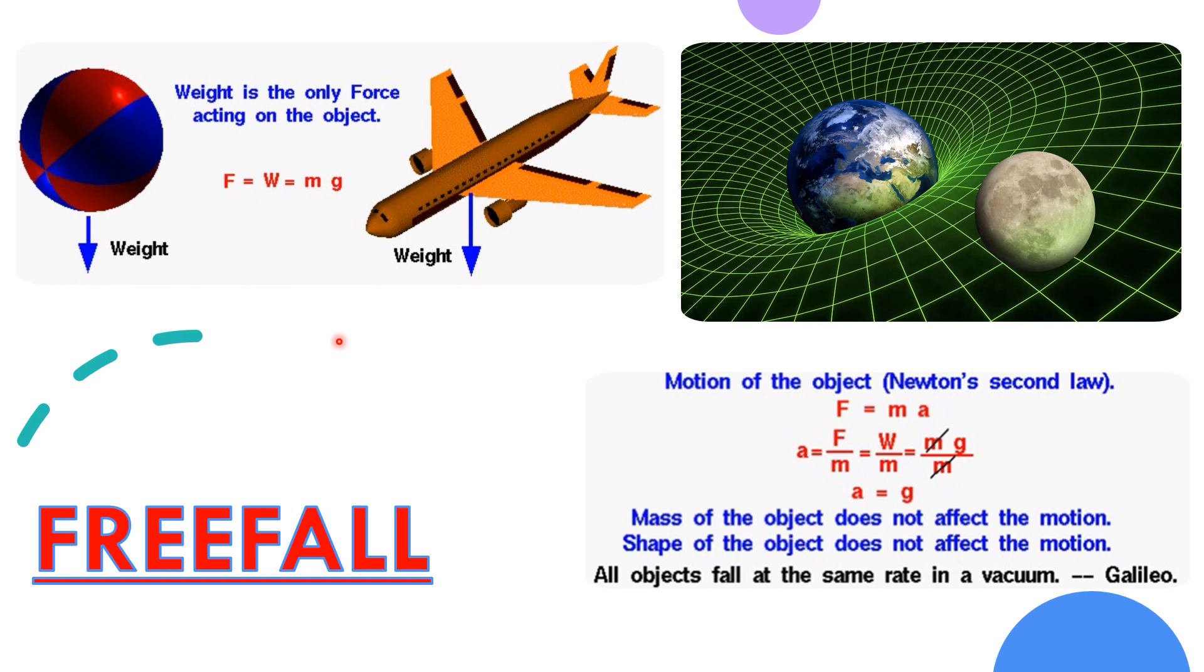Near the earth's surface, g is 9.8 meter per second square or 32.2 feet per second square. In reality, however, g decreases with increasing altitude and very slightly with latitude.